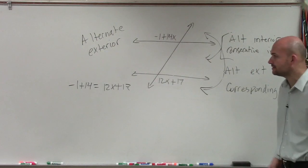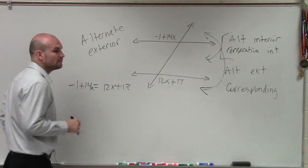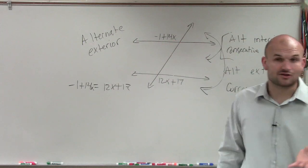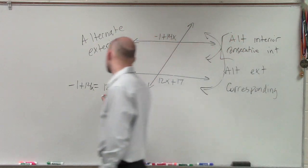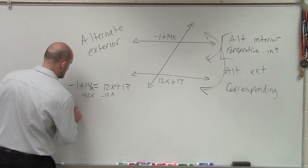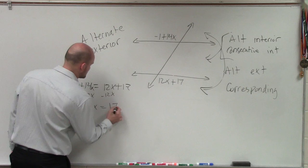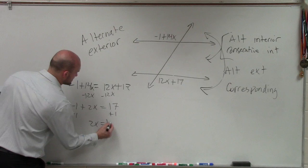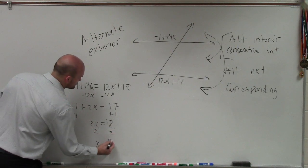Now, to solve from here, that's 14x. We notice we have an x on both sides. And if you guys remember at the beginning of the year, I told you we're going to be solving a lot of problems with the x on both sides. So, therefore, what you guys are going to do from here is you can do it a couple different ways, but you can subtract 12x. So, therefore, you have negative 1 plus 2x equals 17. Add 1. 2x equals 18. Divide by 2. X equals 9.